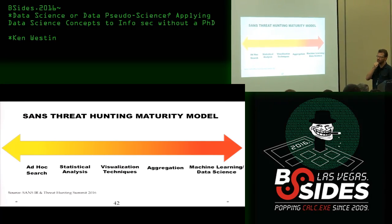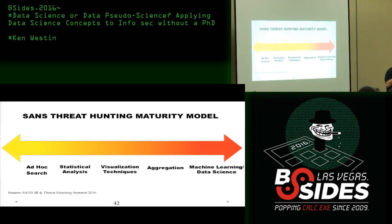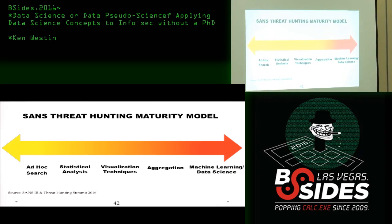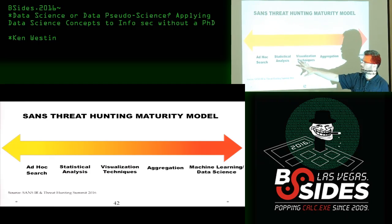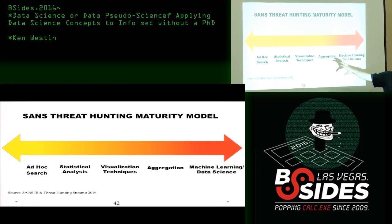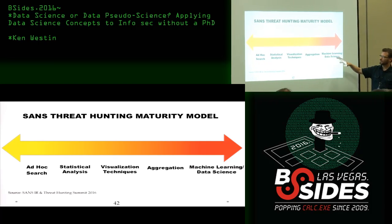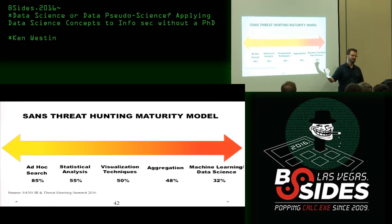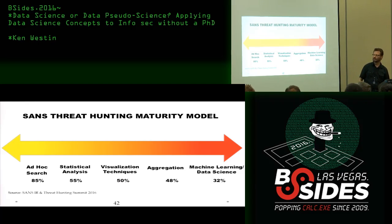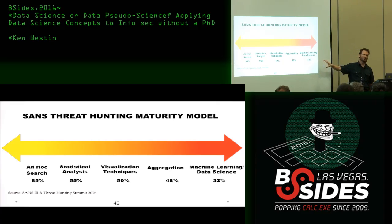SANS had a summit for incident response and threat hunting a few months ago and they modeled out the threat hunting maturity model. Most folks are using ad hoc search, statistical analysis, visualization techniques, and aggregation. We have basic log search, creating dashboards, leveraging our SIEM, even up to advanced correlations. And then we're starting to see more machine learning and data science being leveraged. They polled the attendees: at least 85% are using search, statistical analysis about 55%, visualization techniques around 50%, and 32% are leveraging something in the machine learning and data science area — either doing it directly themselves or using a tool with an add-on.